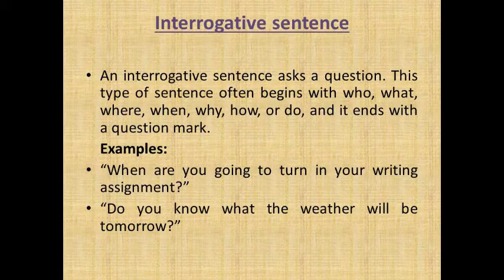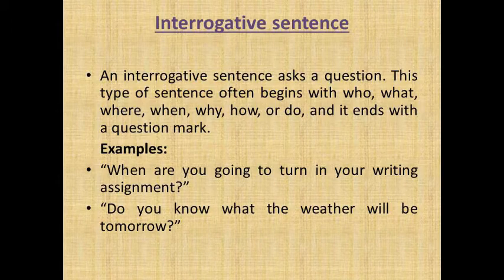An interrogative sentence starts with who, what, where, when, why, how, or do, and ends with a question mark. For example: 'When are you going to turn in your writing assignment?' — this sentence starts with 'when' and ends with a question mark. Another example: 'Do you know what the weather will be tomorrow?' — this sentence starts with 'do' and ends with a question mark.